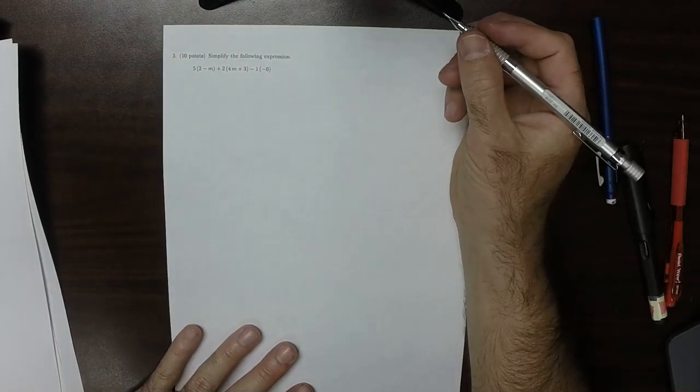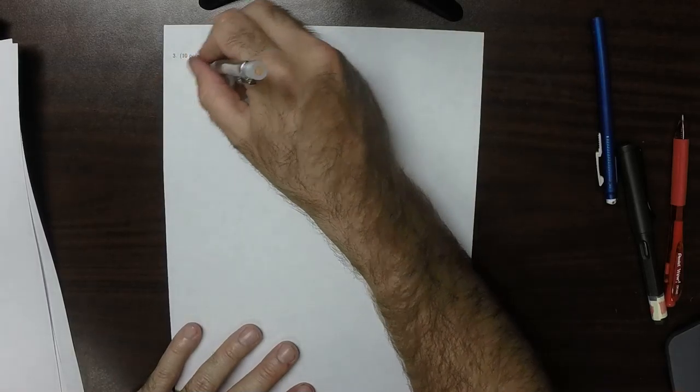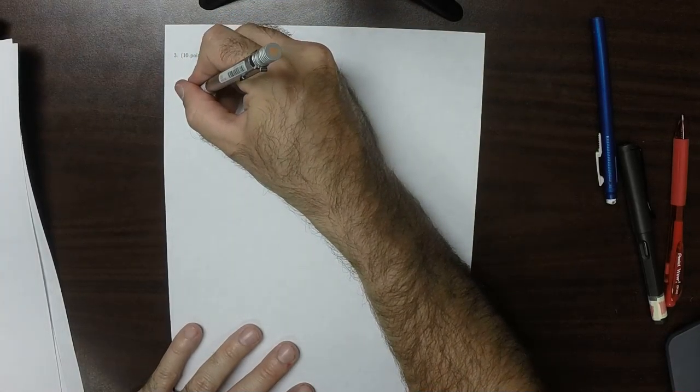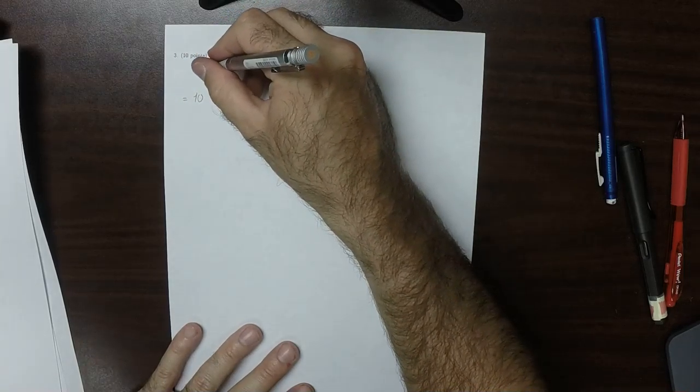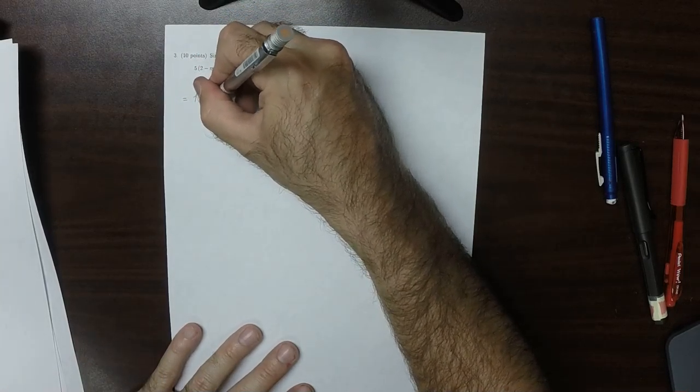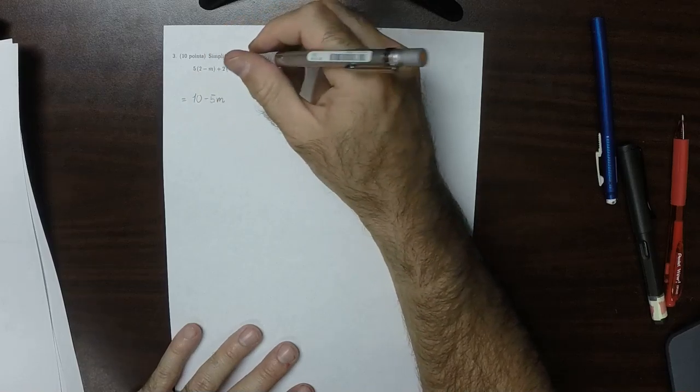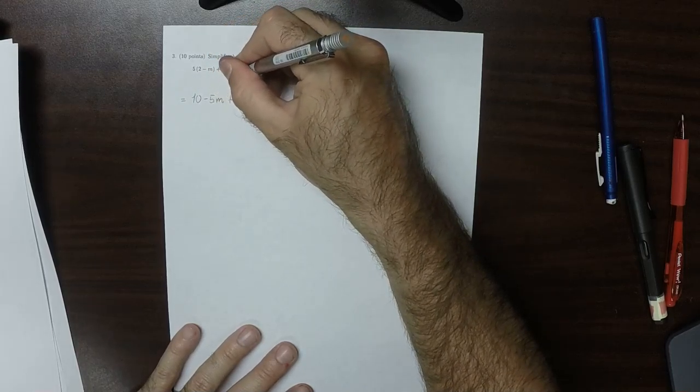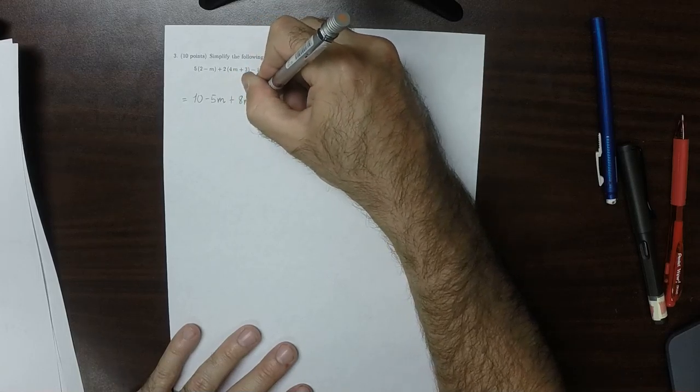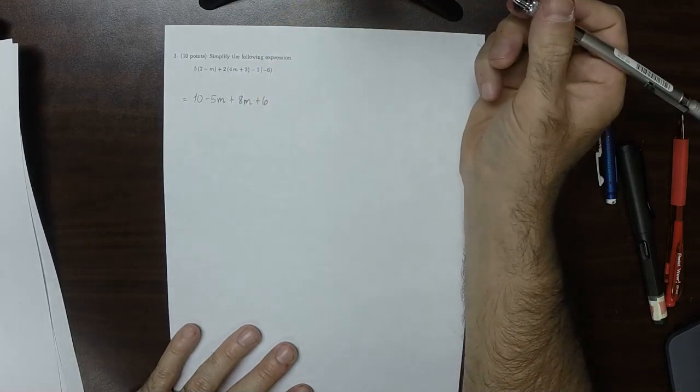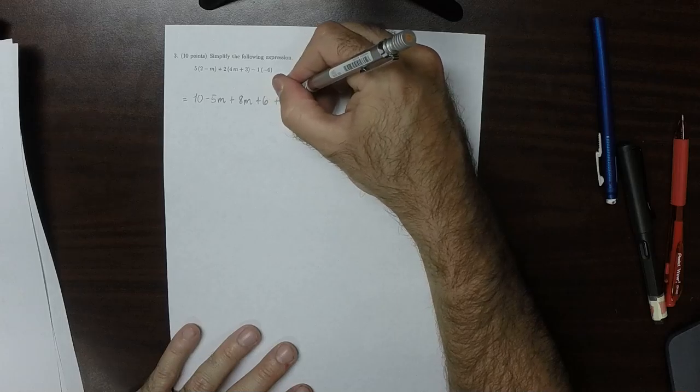So a bunch of distributions here. That would be equal to 10, minus 5m, plus 8m, and then plus 8m, plus 6, and then plus another 6.